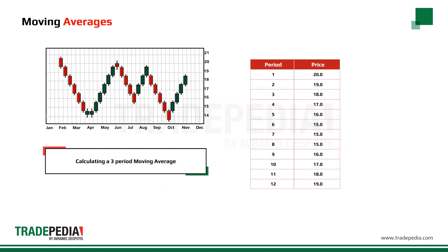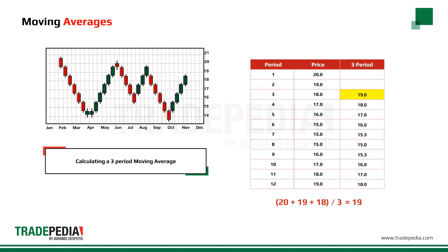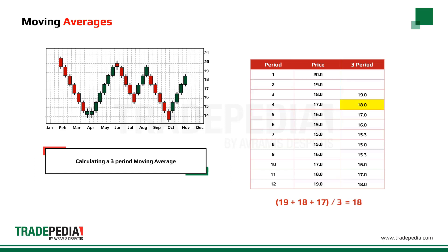To calculate a three-day moving average we need to add the closing prices of the last three days and divide by three. In our example, 20 plus 19 plus 18 divided by 3 gives us 19. On the next day, 19 plus 18 plus 17 divided by 3 gives us 18. The next day the moving average goes to 17 and so on. Plotting these points on the chart we can see how the average is following the price.